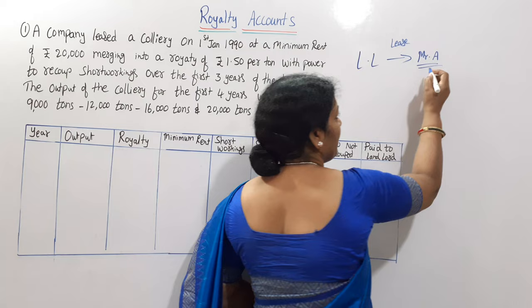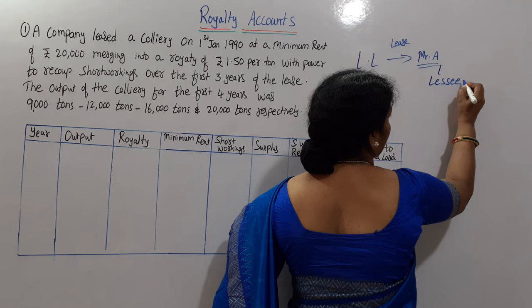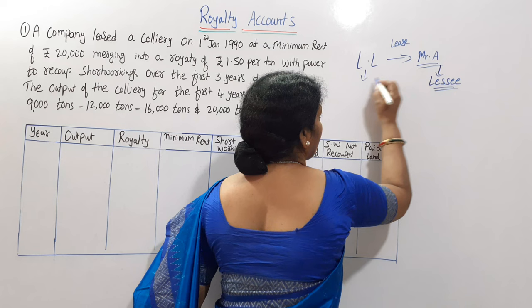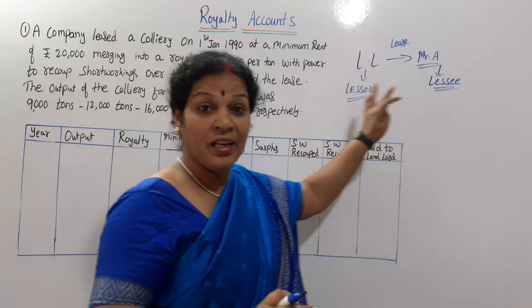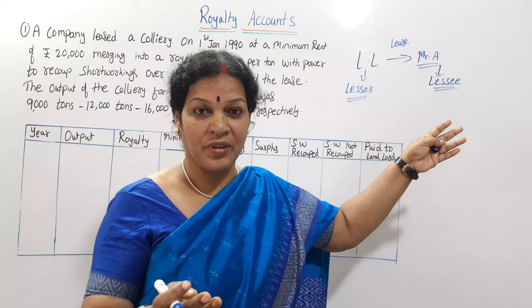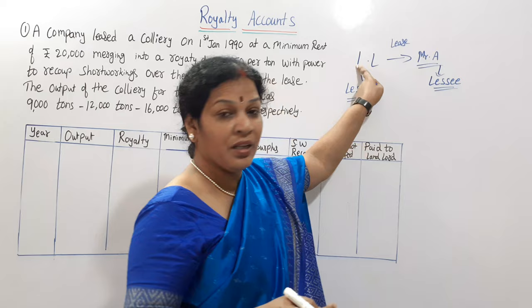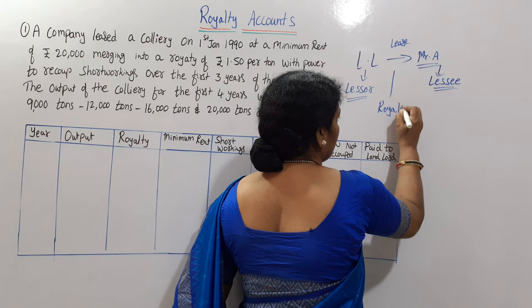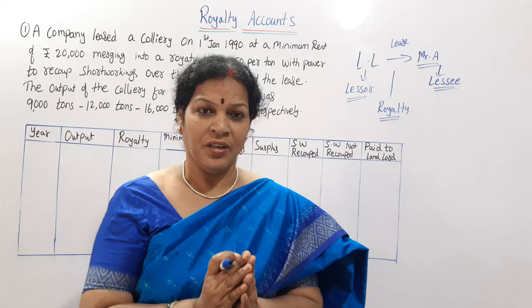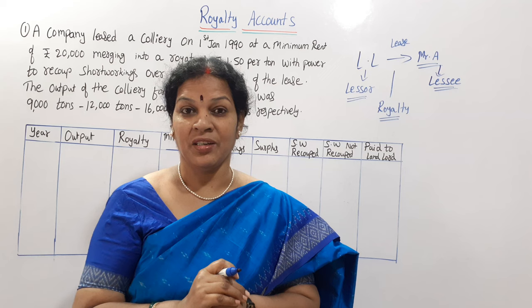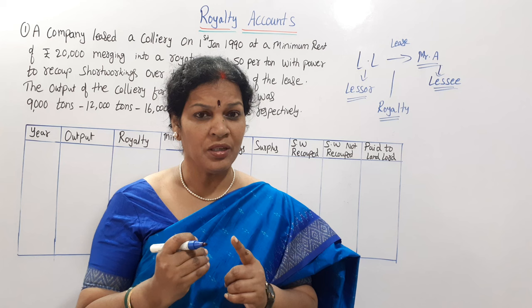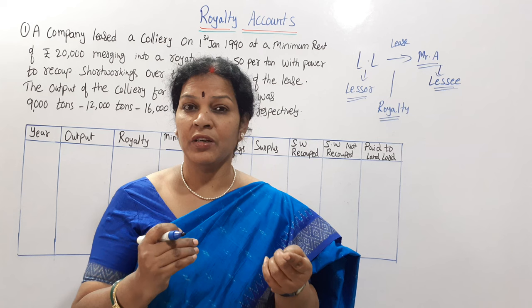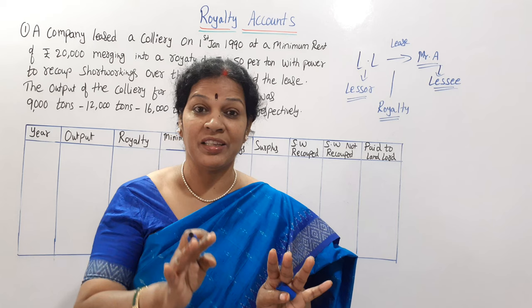Mr. A we call the lessee, and the landlord will be called the lessor. The consideration — meaning the rent or lease amount — that he is going to pay to the landlord is called royalty. This royalty will always be based on production. For example, first year his production is around 10,000 tons, so royalty would be 10,000 tons at the rate of 1 rupee, 2 rupees, or 5 rupees per ton, whatever is decided by the landlord and lessee.